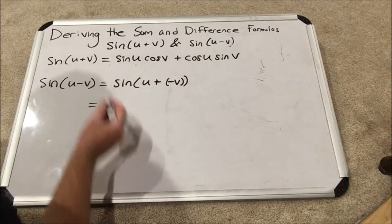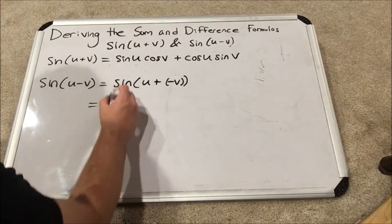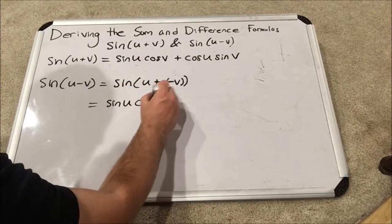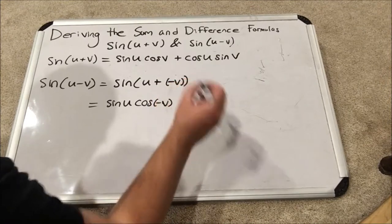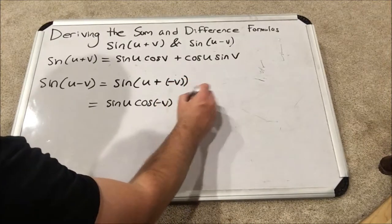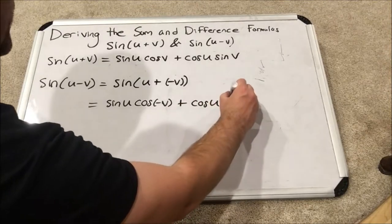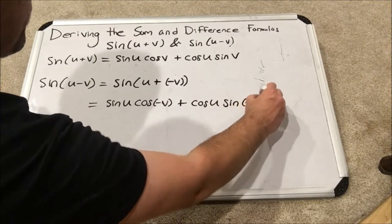I did something similar in part one when we were working with the cosine addition and subtraction formulas. Let's go ahead and write what this equals. So, according to my already derived formula, this equals the sine of U cosine negative V plus cosine of U sine negative V.